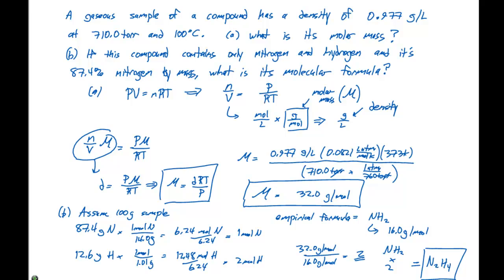To recap, we've derived a nice way for us to figure out molar mass if we're given a density. The molar mass equals density times R times T divided by P. We did that in the first half. Then we used what we already know about determining empirical and molecular formulas to determine the identity of our gas containing nitrogen and hydrogen. That's what we did in the last part to solve for B.